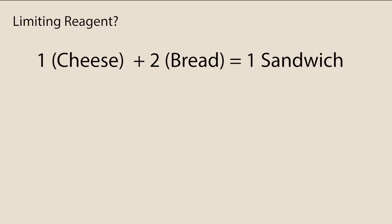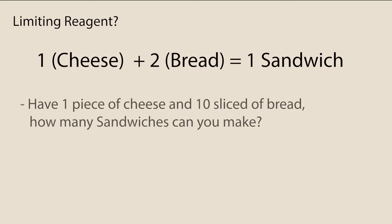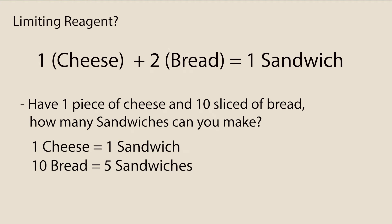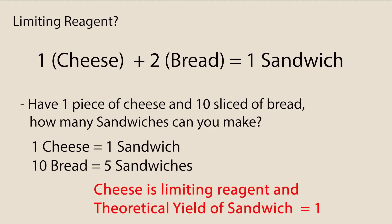For example, let's say the equation to form a sandwich is as follows: one slice of cheese and two slices of bread make one sandwich. We can look at this the same way as a chemical equation. So if you had one piece of cheese and 10 slices of bread, how many sandwiches can you make? From the balanced equation, one piece of cheese means you can make one sandwich. With 10 pieces of bread, you can make 5 sandwiches. So in this case, the cheese limits the amount of sandwiches formed, so it is the limiting reagent. The cheese will be fully consumed before the bread, and we cannot make any more sandwiches once the one piece of cheese is consumed. So the reactant that produces the least amount of product is our limiting reagent.